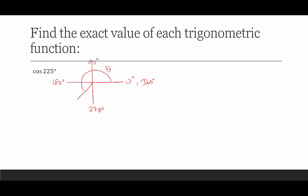In quadrant 3, cosine refers to the x-coordinate, which is negative. From our ASTC chart, only tangent is positive in quadrant 3, so we expect cosine of 225° to be negative. To find the reference angle, we subtract: 225° minus 180° gives us 45°. So our reference angle is 45°.